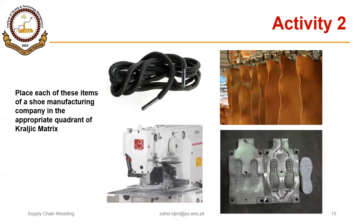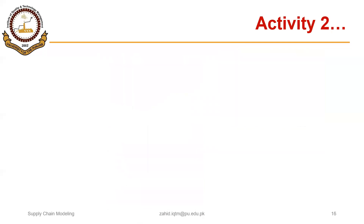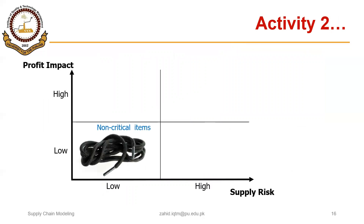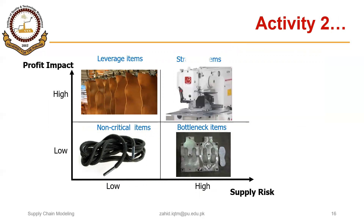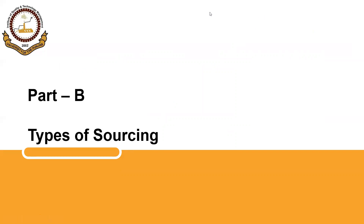Taking another example — a shoe manufacturing organization — consider four items: laces, leather/skin, a specialized embroidery machine, and the mold to make the shoe sole. You can classify these into non-critical, leverage, bottleneck, and strategic items. There may be slight debate on positioning some items, but the key point is that all purchased items in an organization must be classified into these four groups so that a relevant procurement strategy can be formulated, which we will discuss in the next segment.